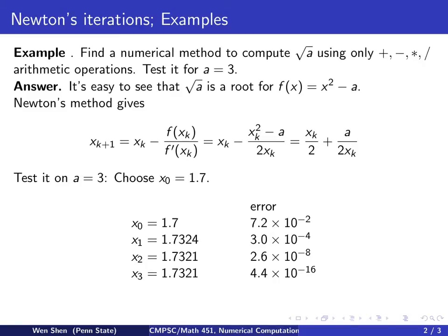And if I do one more iteration, I cannot see the difference with my eye just counting these decimal places. But I can check the error, and now it's 10 to the negative 16.